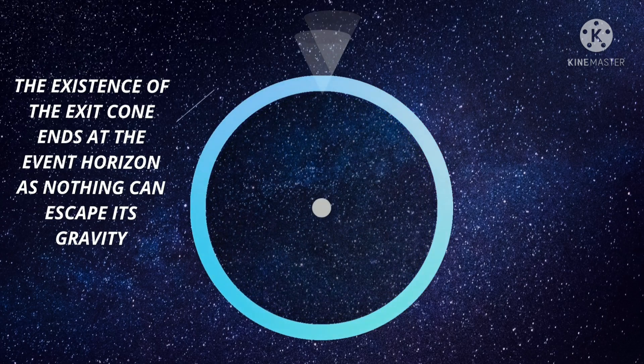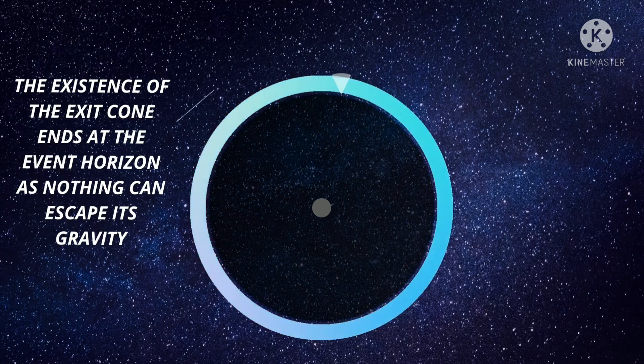As an exit cone moves to the event horizon, it completely vanishes. After all, it is the boundary beyond which nothing can escape, even light.